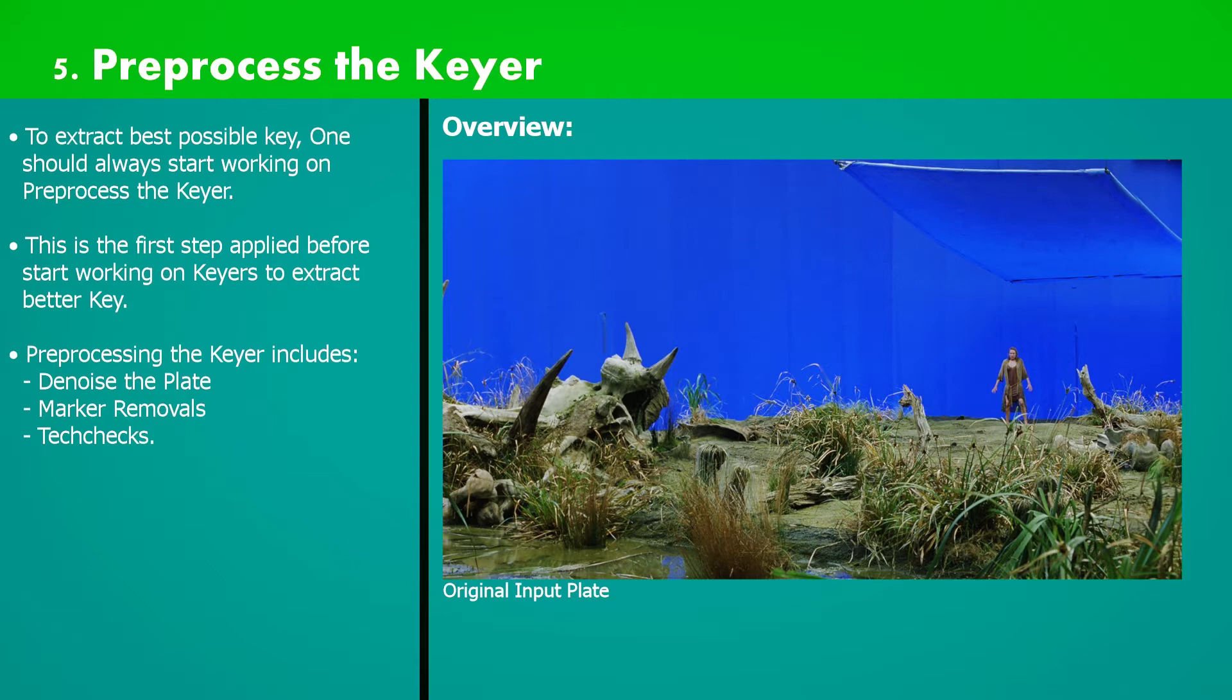The original input plate we will get to start work on key will have all sorts of grains, markers, as well as some light flickers and artifacts caused during film scan process. Using this plate as it is for extracting key will result in making our matte or key grainy, hard, and with artifacts. So the preprocess must be done prior to work.